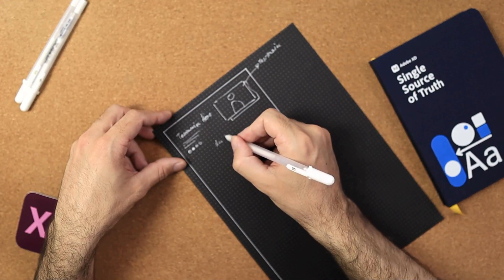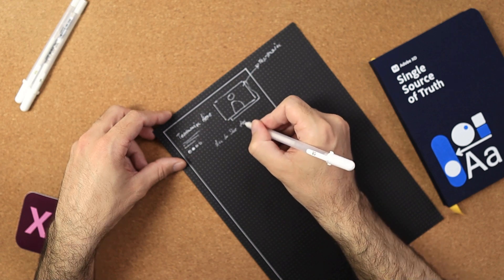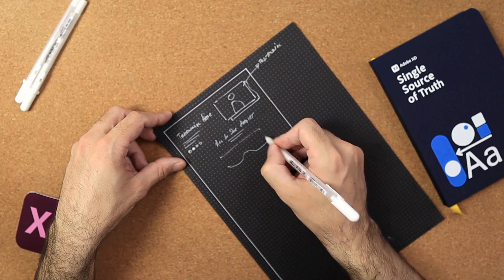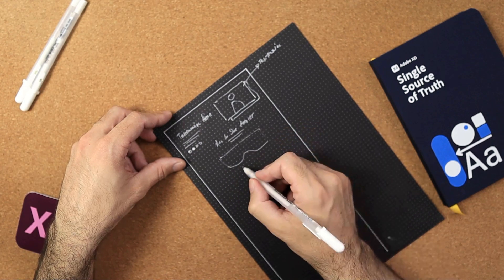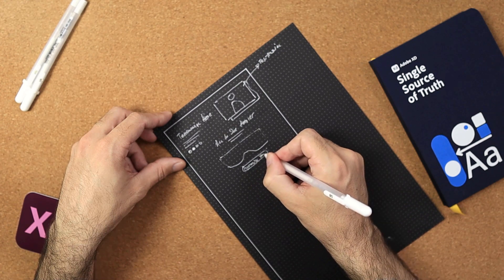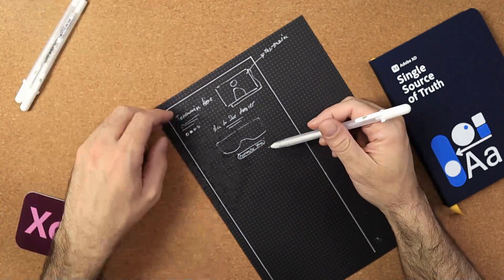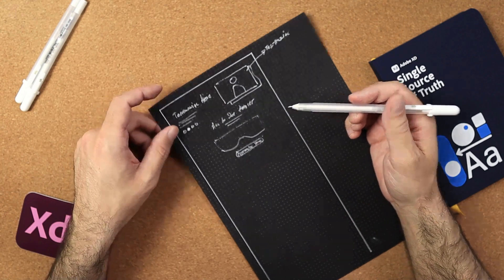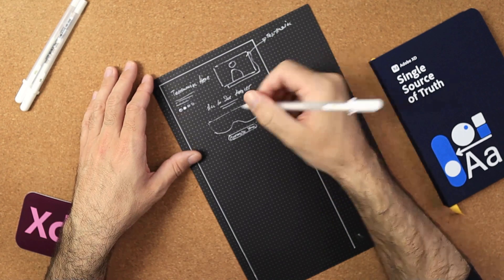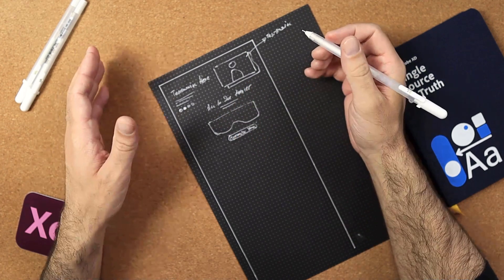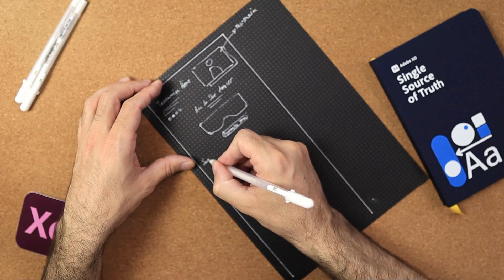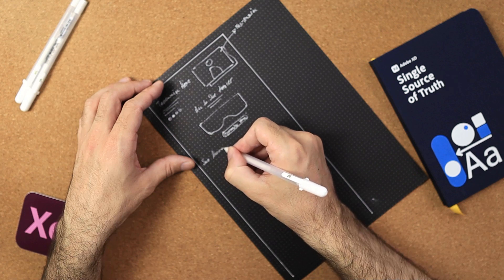Below that we'll say 'All in One Headset' with a paragraph and a nice large image of the VR headset, then a button that says 'Customize Yours.' The whole point is for them to click and choose their colors and apply their own preferences and style to this particular device. You can spend as much or as little time on this section as you want.